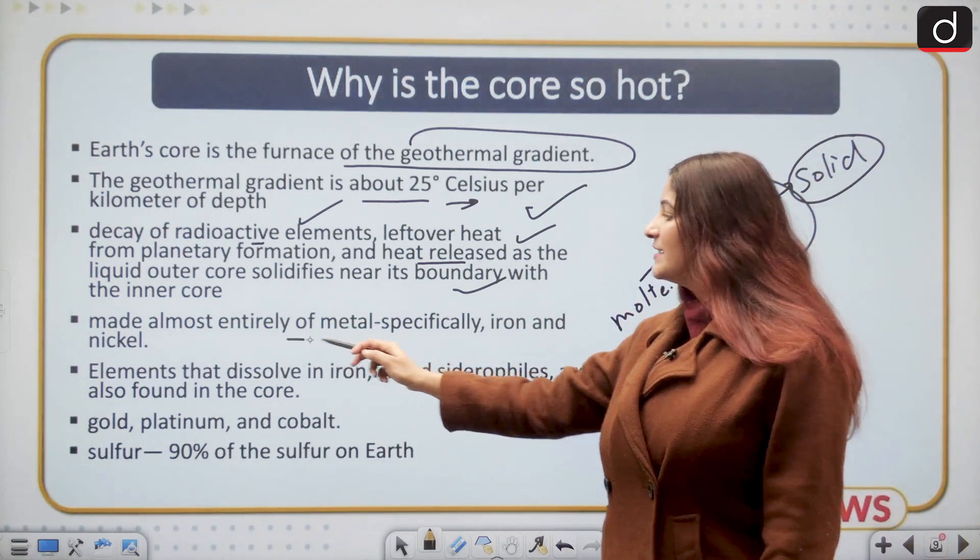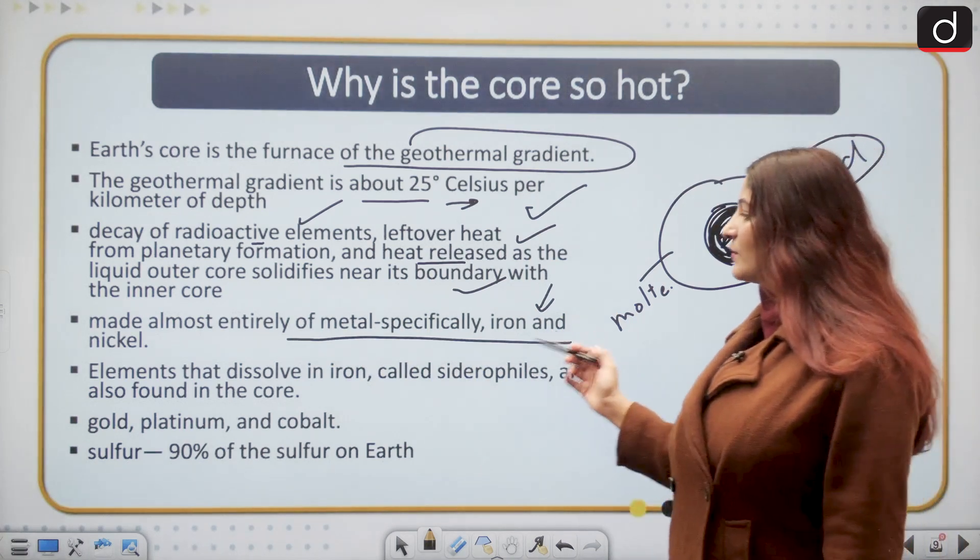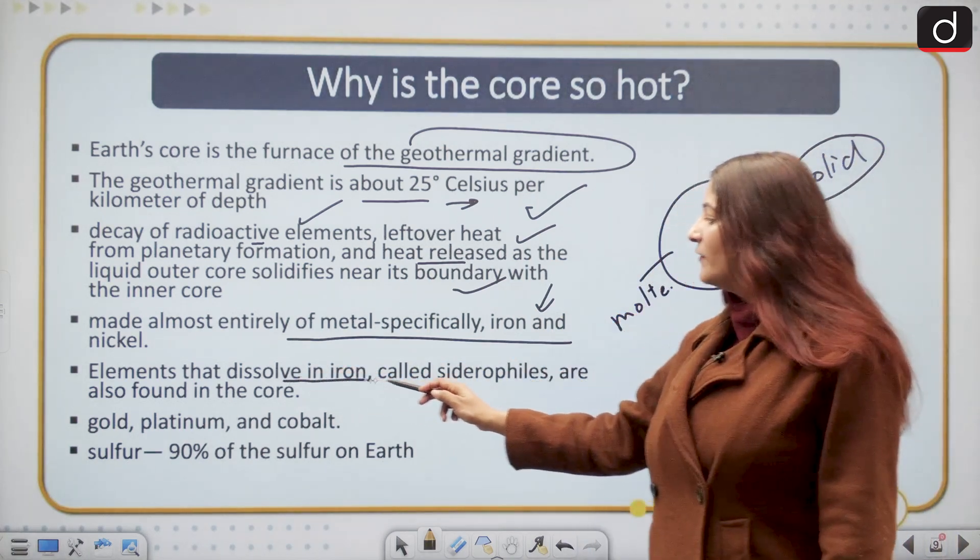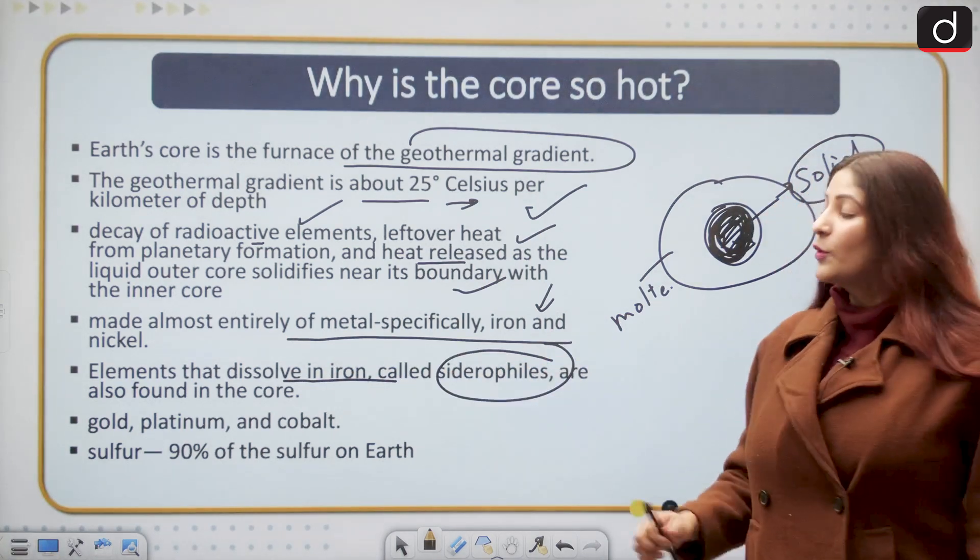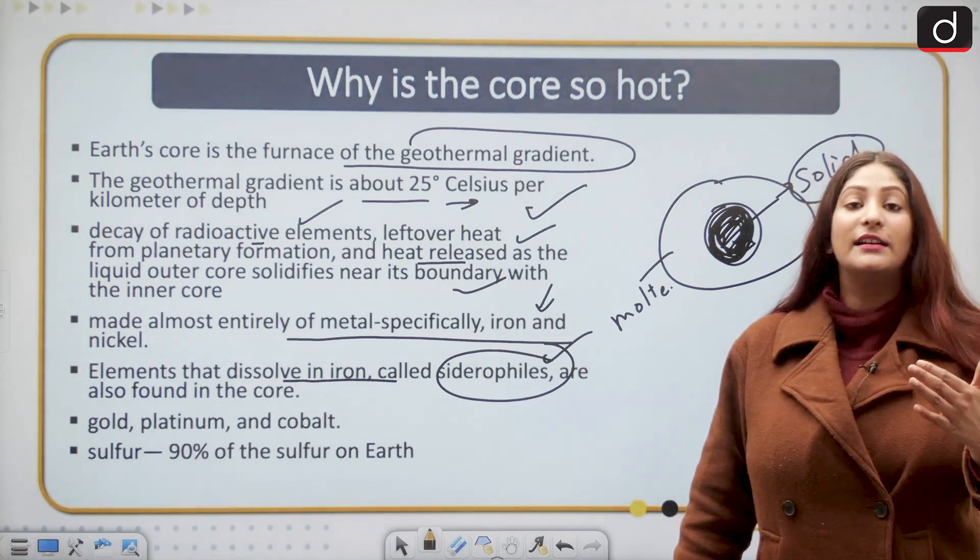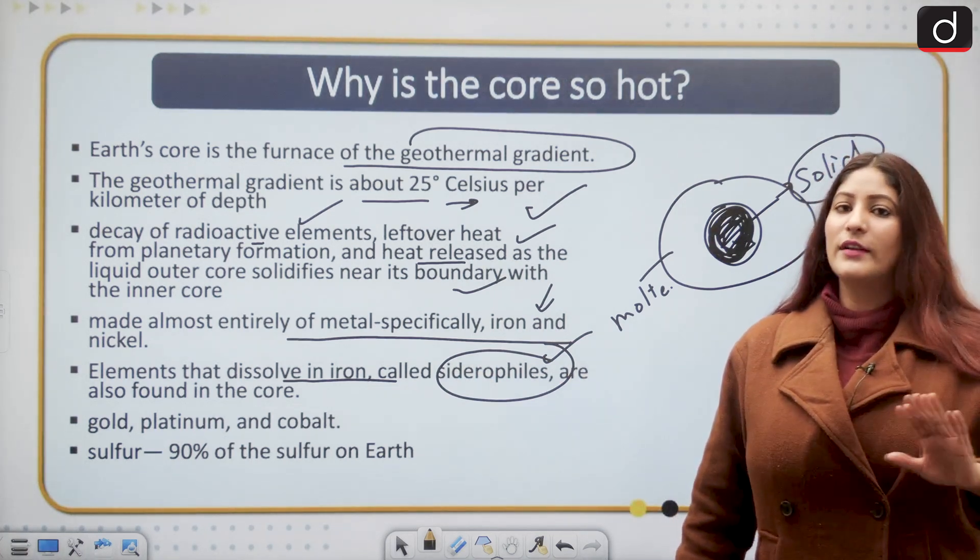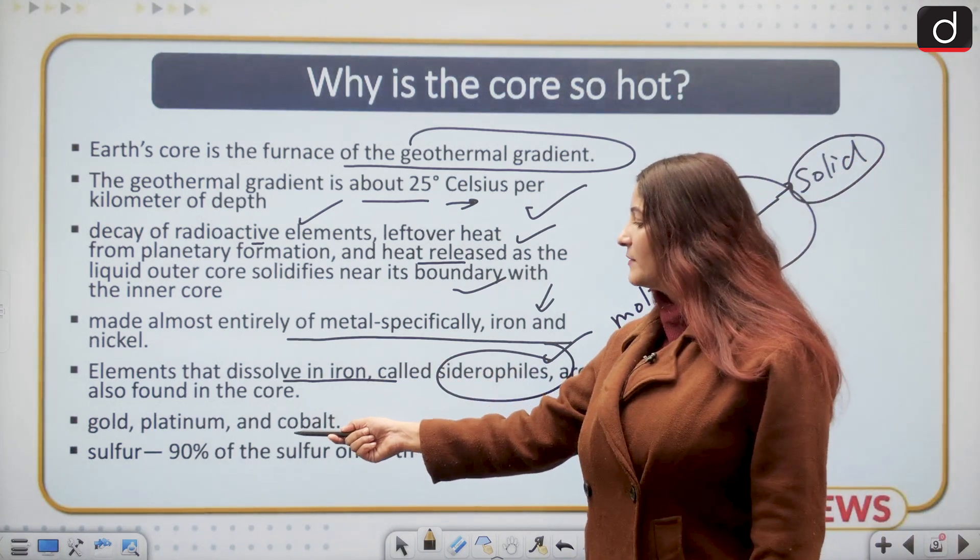This is made almost entirely of metal, specifically iron and nickel. Elements that dissolve in iron, which are known as siderophiles, are also found in the core. Siderophiles dissolve into iron and these are rare earth metals, including gold, platinum, and cobalt.